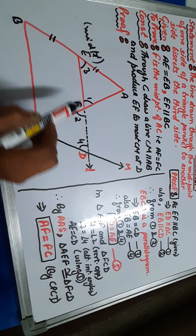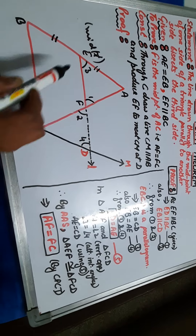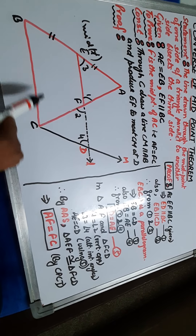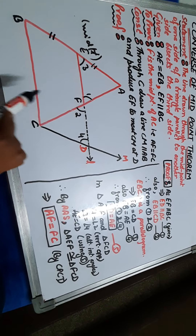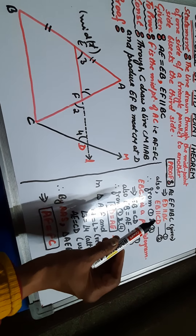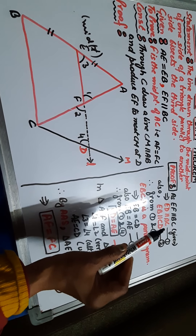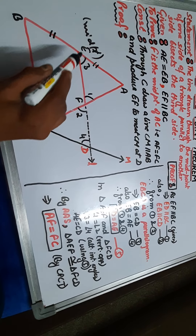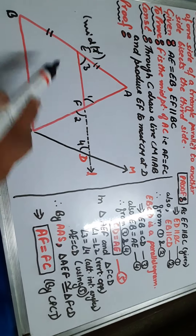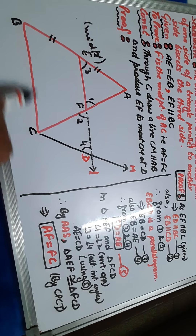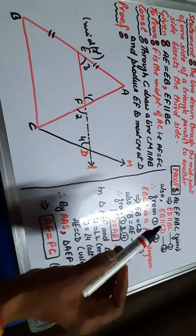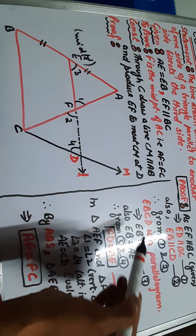In the proof: EF is parallel to BC — this is given. If a part of a line is parallel, then the whole line is parallel to the whole line. So as EF is parallel to BC, therefore ED is also parallel to BC. By construction, CM is parallel to AB. So EF is parallel to CD also. Since EB is parallel to ED (BC) and EB is parallel to CD, we can say that EBCD is a parallelogram.